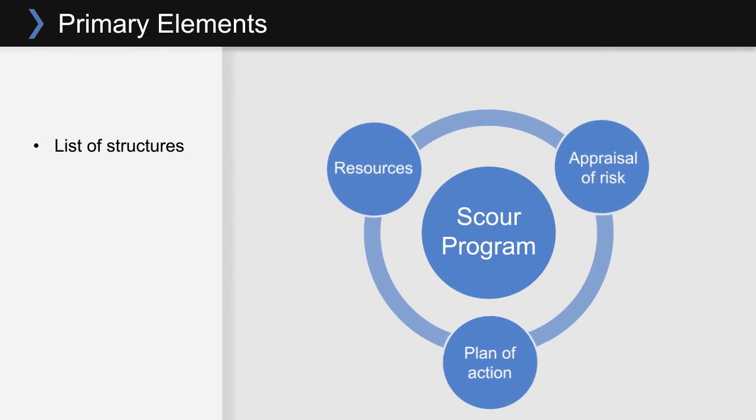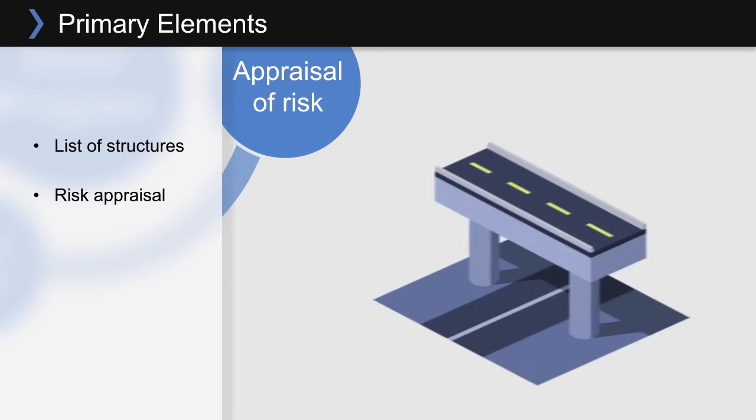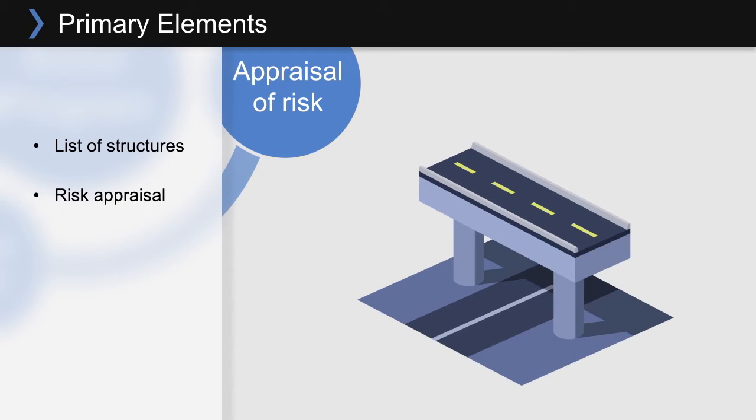For each structure on the list, the team develops a risk appraisal. Using bridge inspection data or engineering assessment, the scour potential of a bridge is determined. For example, a bridge that doesn't cross a waterway would be identified as having no potential for scour, whereas a bridge subject to failure during the appraised flood event would be identified as scour critical.